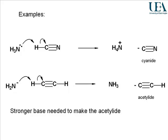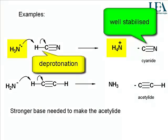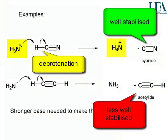Now let's put it into practice in terms of how to drive reactions forward. We've got ammonia as the starting point to make an ammonium ion by deprotonating HCN. That reaction works well because that cyanide anion is better stabilized than the acetylide.